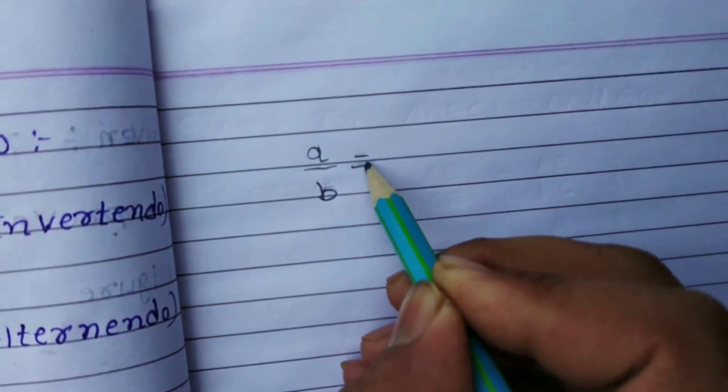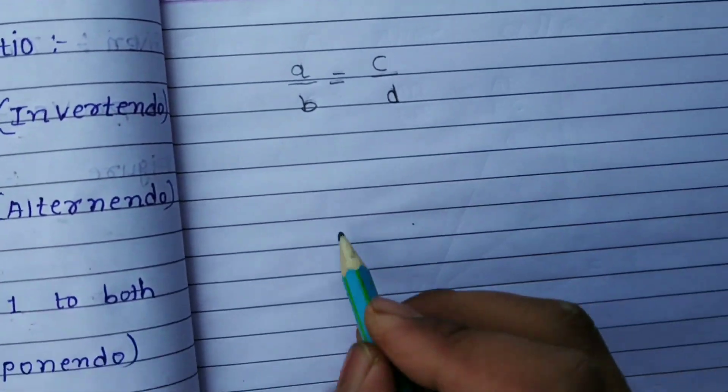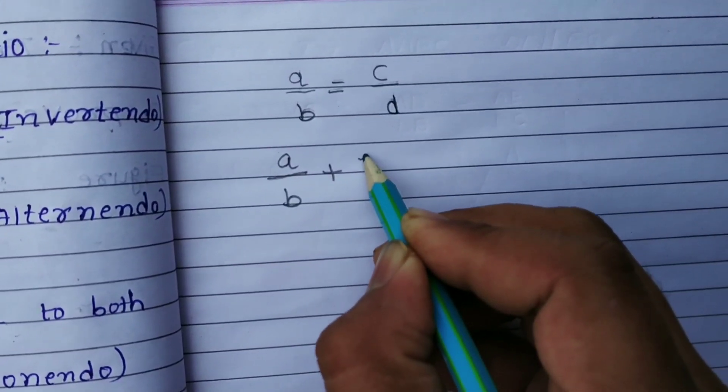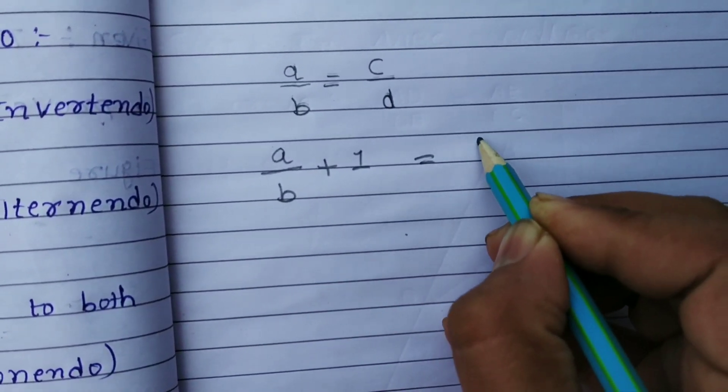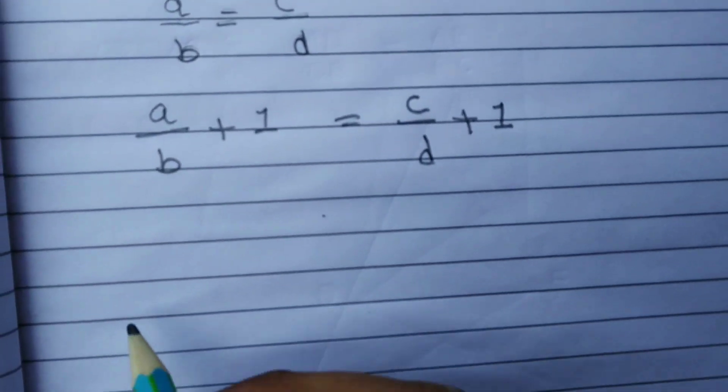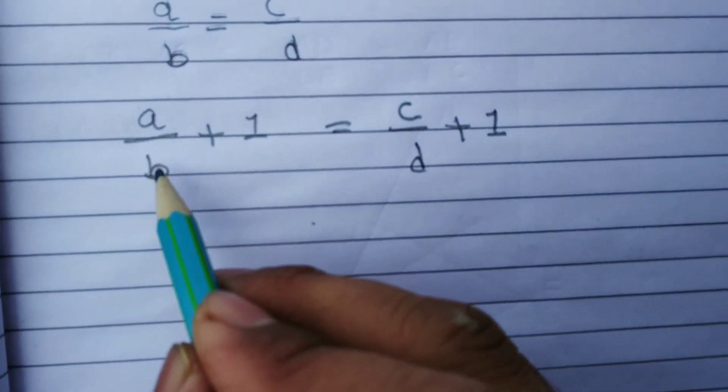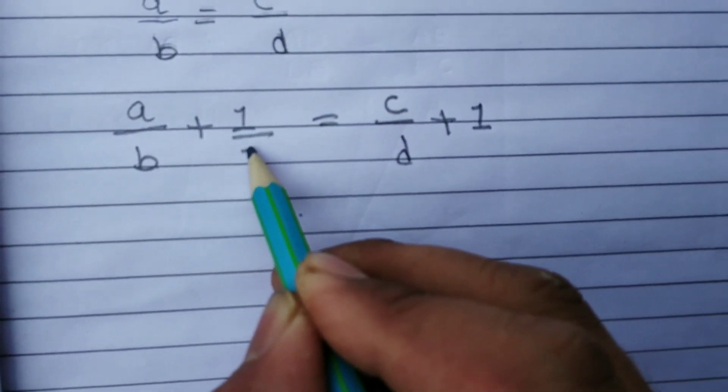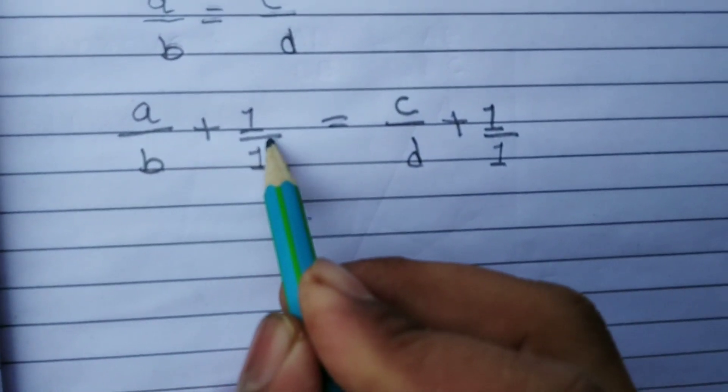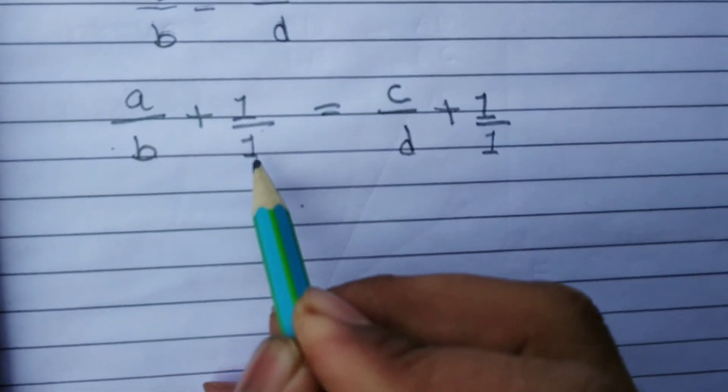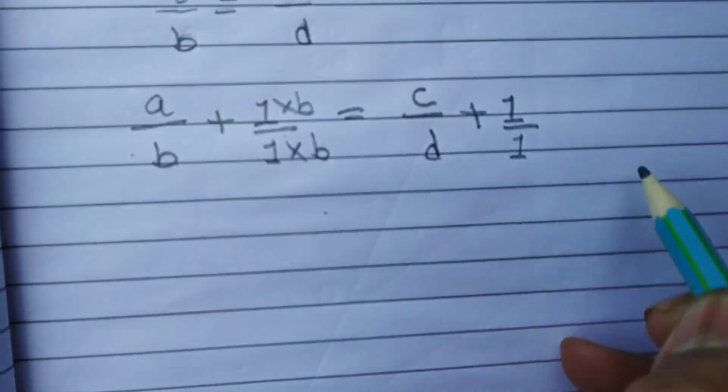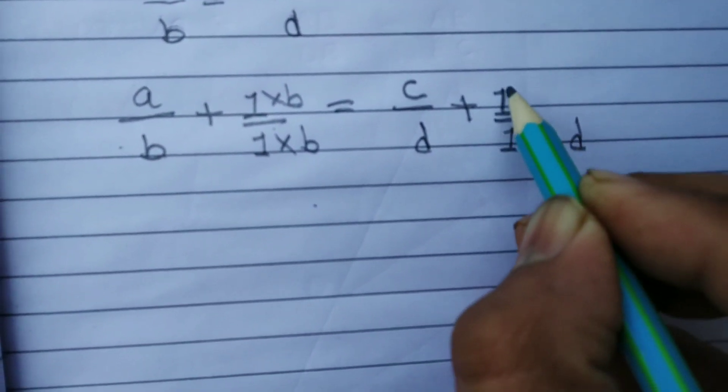A upon b is equal to c upon d. It is given. Now add 1 to both sides: a upon b plus 1 is equal to c upon d plus 1. Here we have a upon b and here we have 1. To add these, we have to make the denominators equal, meaning we have to multiply by b here. Similarly, we have to multiply by d here.